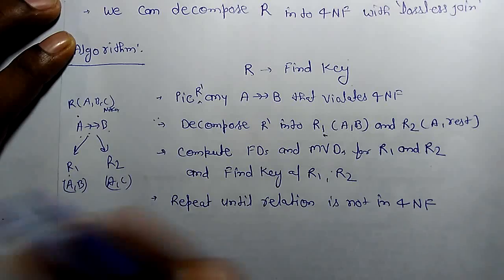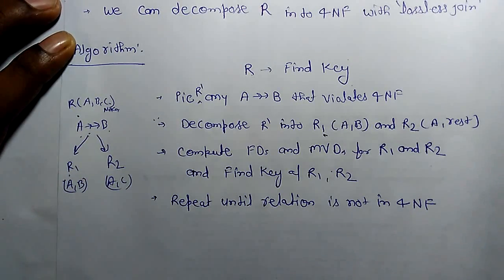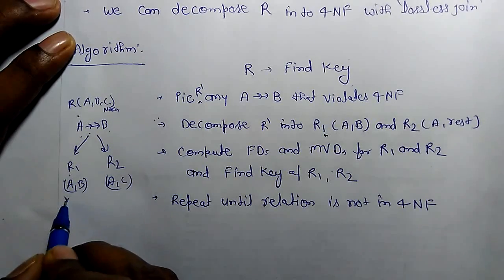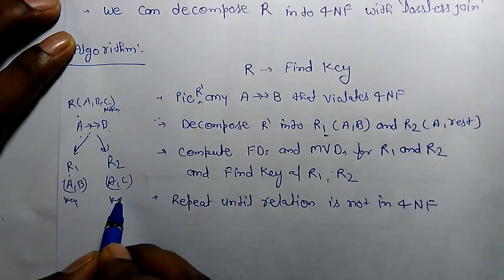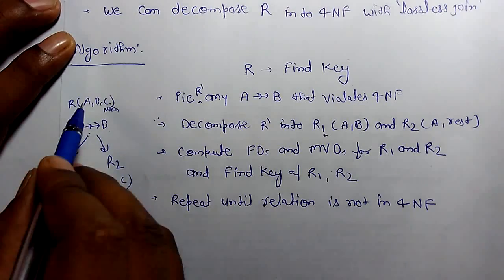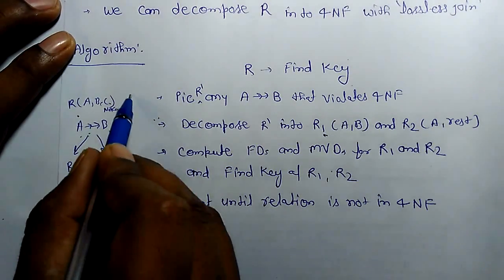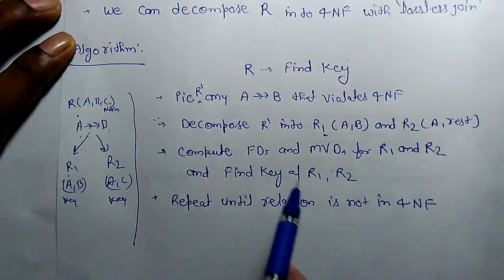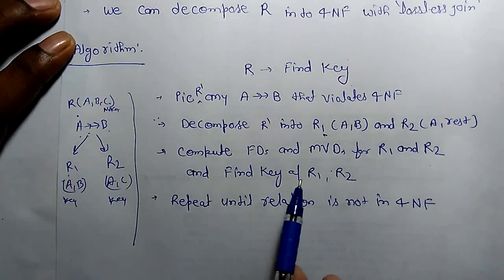And we will find the key of R1 and R2. Here is only 2 or 3, it is already in 4NF. For more than 3, we will find the key of R1 and R2.